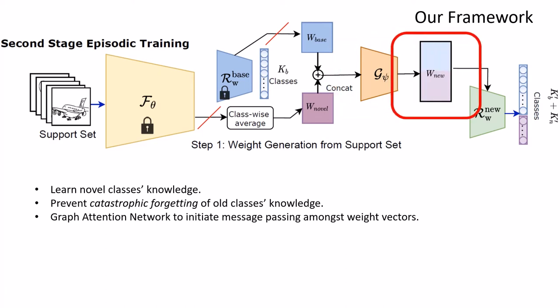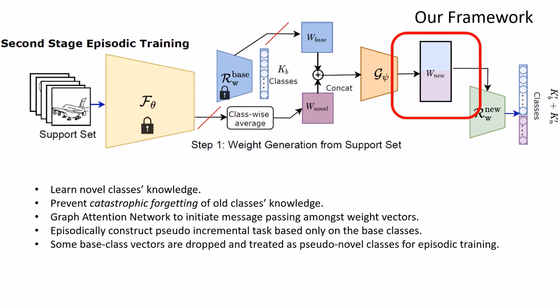Training data set being limited, we episodically construct pseudo-incremental task based only on the base classes to mimic the real testing scenario. For each episode we synthetically drop some base class weight vectors and treat their classes as pseudo-novel classes, whose weights now need to be generated.